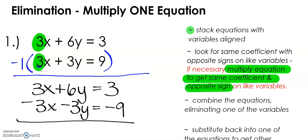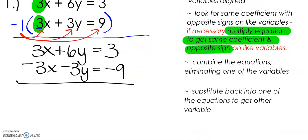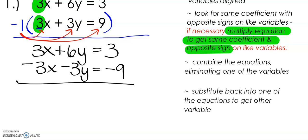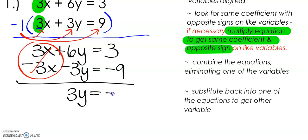Notice I multiplied that negative 1 and distributed it to every term in the second equation — we have to make sure the equation stays balanced. Now we're ready to do our combination step. The 3x's cancel out. The 6y and negative 3y gives us 3y. And 3 and negative 9 gives us negative 6. Divide both sides by 3, and we get y equals negative 2.